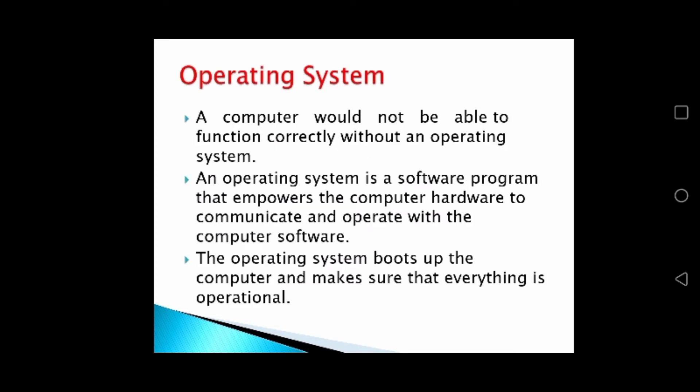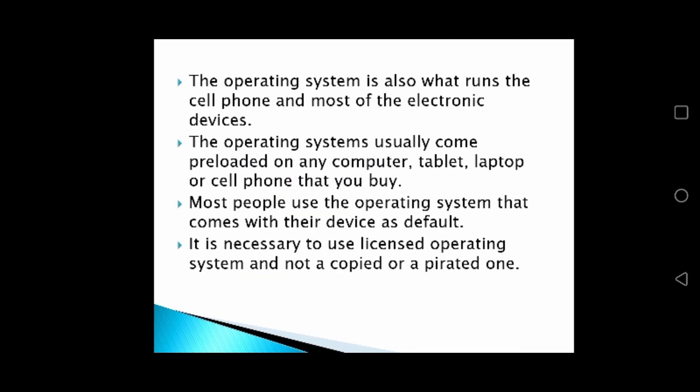Our next part is: what is an operating system? A computer would not be able to function correctly without an operating system. An operating system is a software program that empowers the computer hardware to communicate and operate with the computer software. The operating system boots up the computer and makes sure that everything is operational. The operating system is also what runs the cell phone and most other electronic devices.